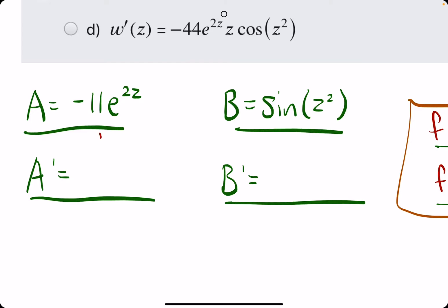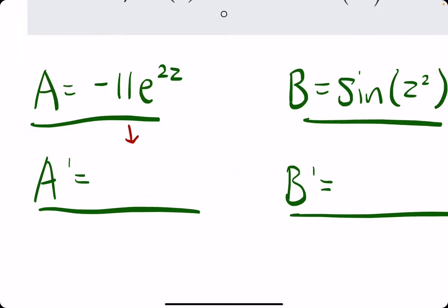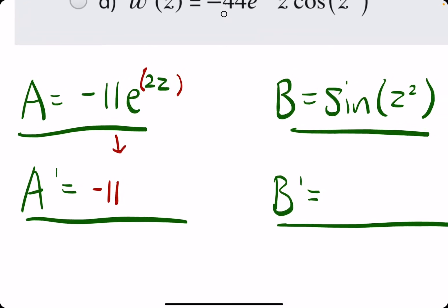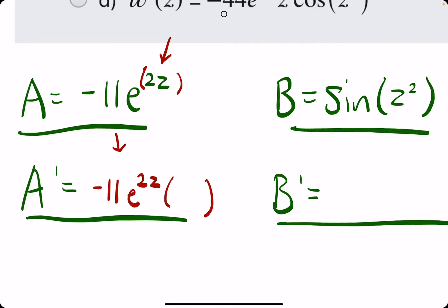Starting with A, using what we know about chain rule and other derivative rules, we have a negative 11 out in front, so that will stay out in front. The derivative of E to the 2Z, or E to the anything, is E to the anything. So we have E to the 2Z in the exponent still, but then using chain rule, we need to multiply what we have by the derivative of the exponent, the inside. The derivative of 2Z is 2.